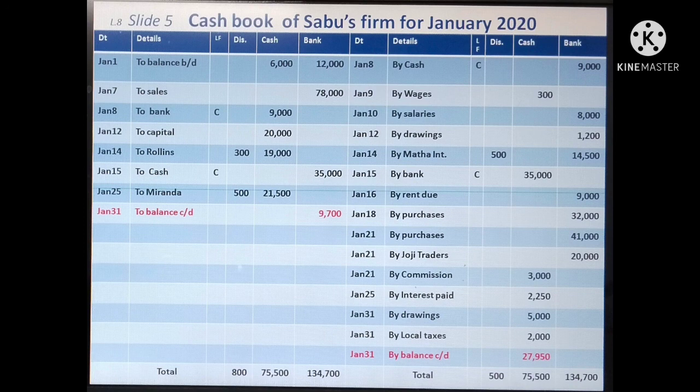January 12, 'To Capital,' Cash Column 20,000 — in Capital Account, post on the credit side 'By Cash 20,000.' January 14, 'To Rollins,' Discount Column 300, Cash Column 19,000 — post in Rollins Account on the credit side: 'By Cash 19,000' and 'By Discount Allowed 300.' The next is a contra entry — no posting in ledger. January 25, 'To Miranda,' Discount Column 500, Cash Column 21,500 — post in Miranda Account on the credit side: 'By Cash 21,500' and 'By Discount 500.'